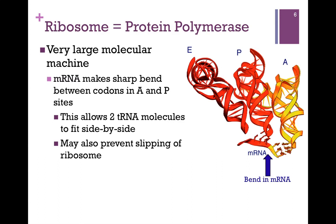At any given time there are three tRNA molecules in the process of translation. How does the ribosome accommodate those bulky, three-dimensionally shaped molecules? The mRNA makes a sharp bend between the codons in the A and P sites. The transfer is going to be from the P to the A site, where the peptidation reaction occurs, so those two molecules need to be close enough to carry out the catalytic reaction. The bending of the RNA allows these two tRNA molecules to be close enough together for the reaction while still being accommodated within the ribosome. This bending may also help to prevent slipping of the ribosome.